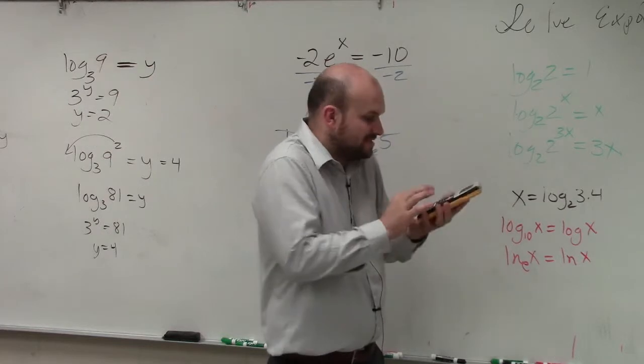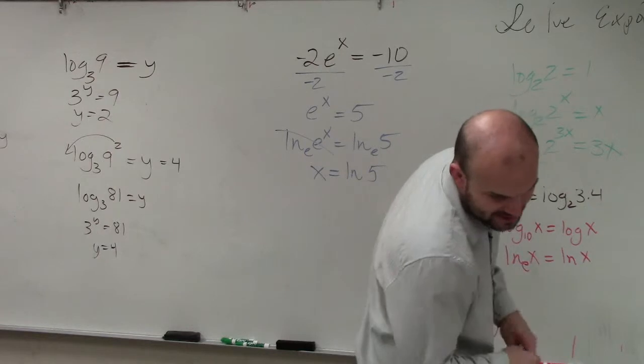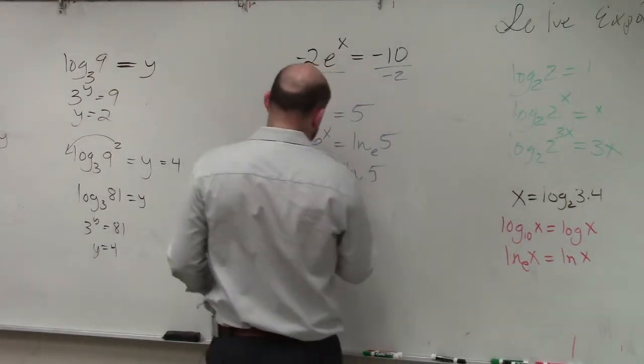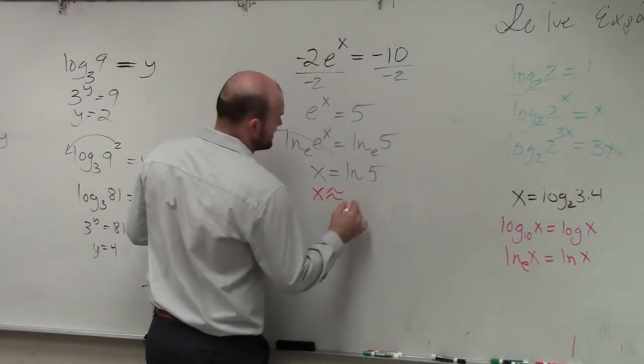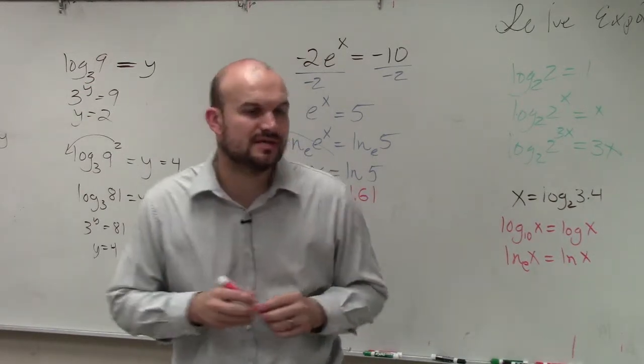But in my calculator, I'm just going to type the ln button and then of 5, which gives me 1.61. So x is approximately 1.61 when I round it. And notice again how I use the approximate.